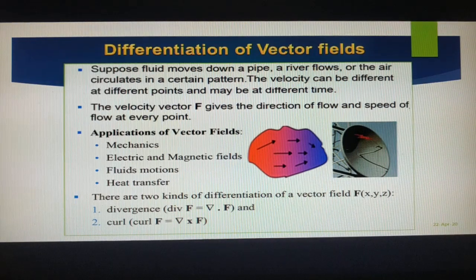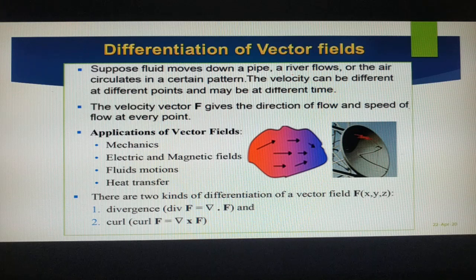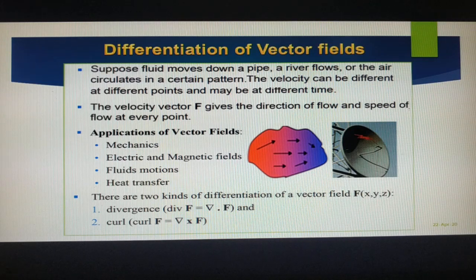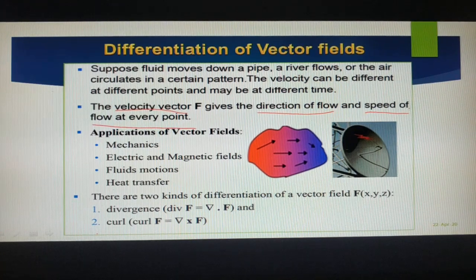Before going to discuss about curl and divergence, we'll start with some examples. Suppose there is a fluid moving down in a pipe, or a river flows, or maybe air circulates in a room. In all these examples, the velocity can be different at different points or at different times. The velocity is a vector field which gives the direction of flow and speed of flow at each and every point.